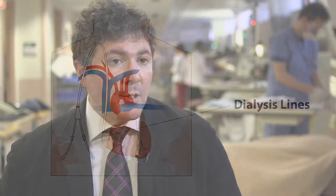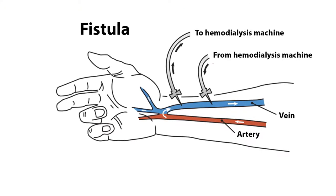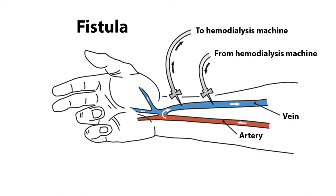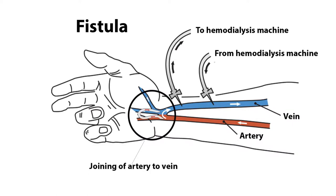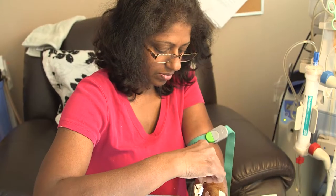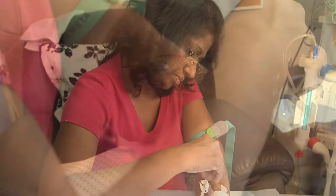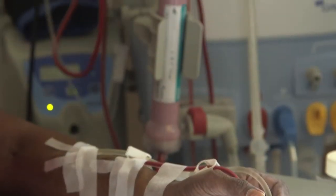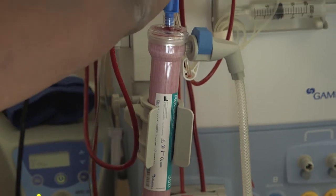The ideal process is to have an artificial vein made by the surgeons, called a fistula. A fistula is a joining together — they join the side of an artery onto a vein, and the high pressure from the artery allows that vein to expand. This creates an environment where nurses can needle that vein three times a week to allow blood to flow onto the machine and be cleaned.